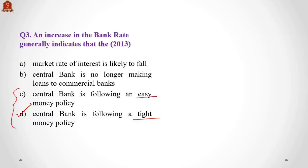Let us also look at options A and B. Option A says market rate of interest is likely to fall. Please note that all rates in the economy work in the same direction. If the repo rate increases, all associated rates are likely to increase — reverse repo rate, bank rate, the bank's lending rate MCLR — all move in the same direction. So when bank rate increases, it will not lead to a decrease in market rates. Option B is an extreme statement and can also be eliminated. Answer is D, tight money policy.